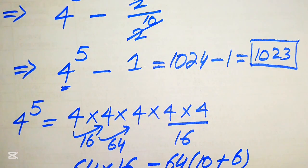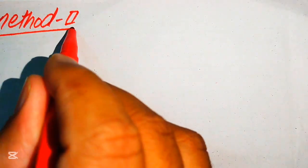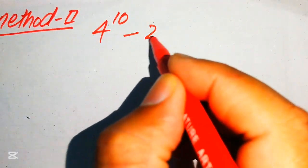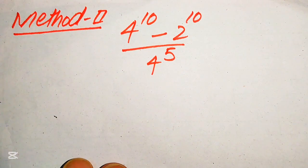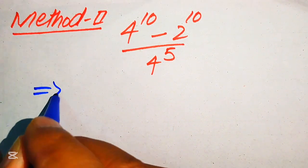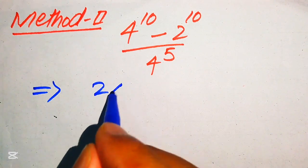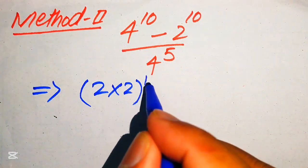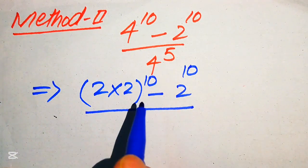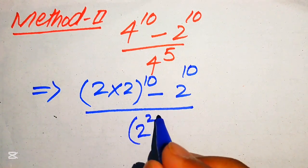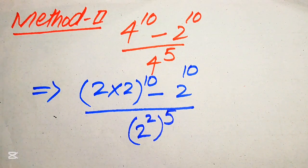That is our final answer from the first method. Now we move forward to solve this problem using the second method. We copy down the given expression: 4 to the power of 10 minus 2 to the power of 10, divided by 4 to the power of 5. We focus on the first term — the base is 4, which we write as 2 times 2, with exponent 10.